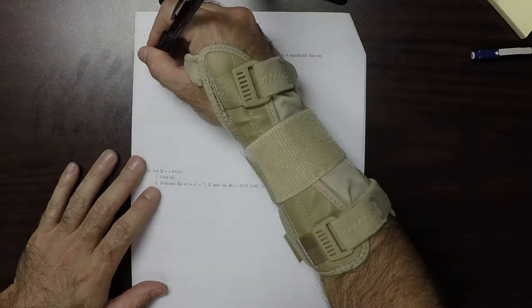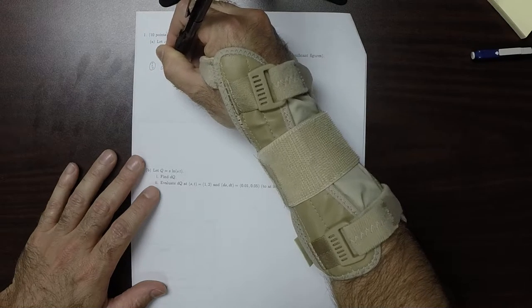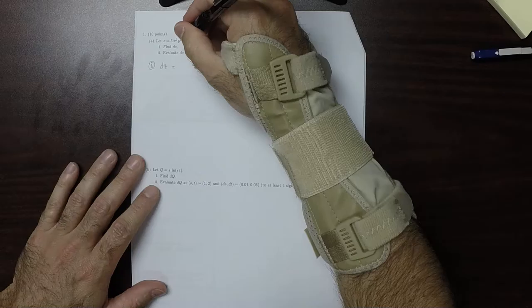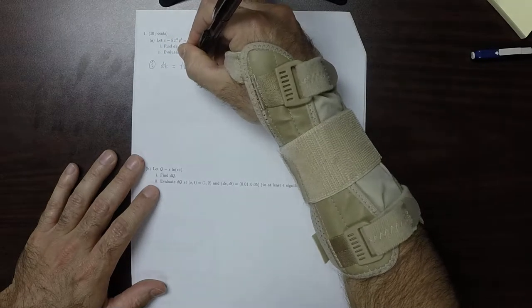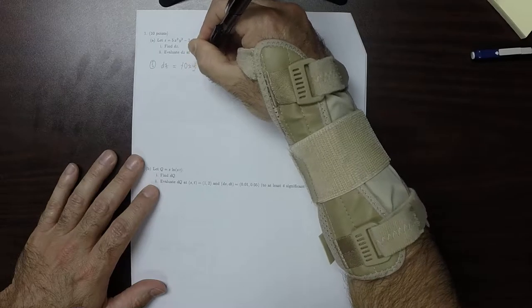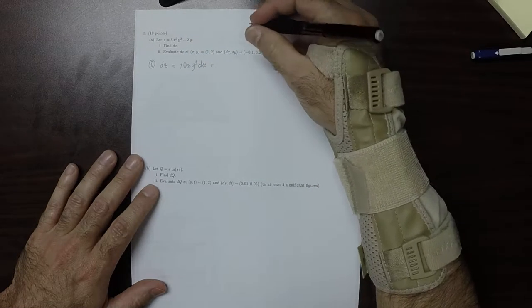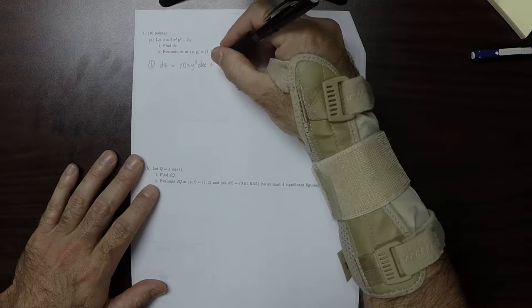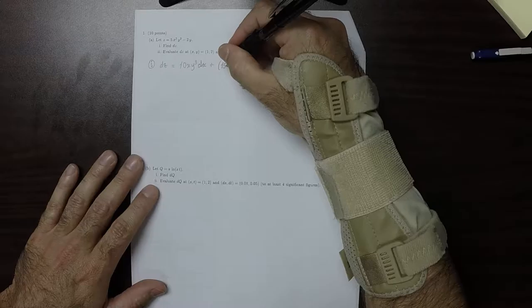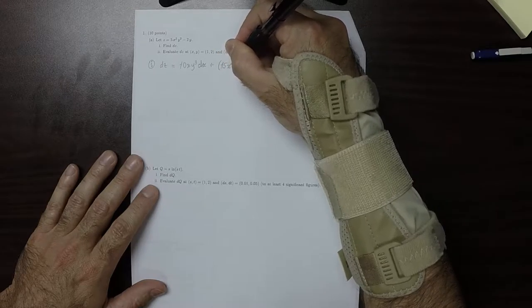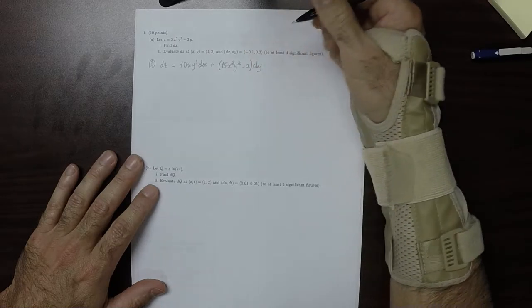OK, so then part i. dz, that is the x partial dx. So then 10xy³dx, plus the y partial dy. So that would be 15x²y² minus 2 dy.